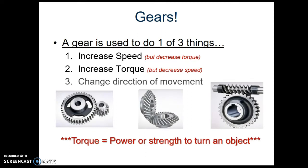And then sometimes we just need to change direction of movement. This little picture shows that sometimes you want to rotate an object in two different directions, or sometimes you want to change the type of movement. This is called a rotary movement, and you just want it to move in a straight line at the end of your mechanism. So there's a number of reasons we could use gears when we build things.